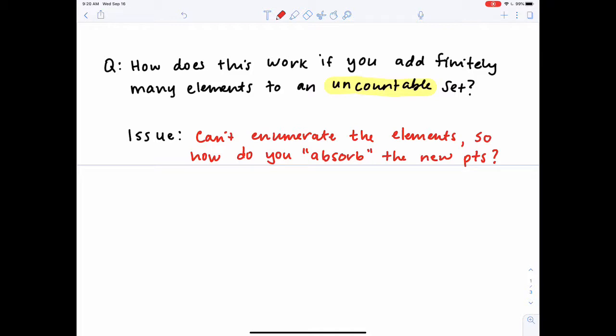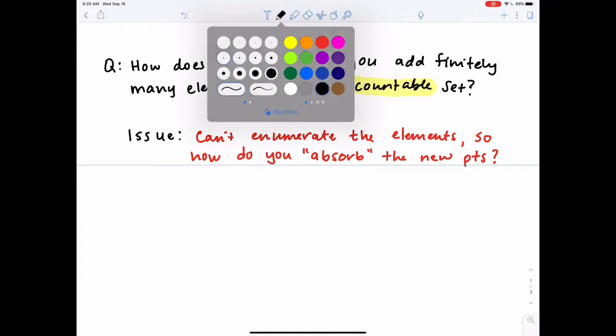Well, when you have an uncountable set, it is possible to look at a subset of it that is countable. Because remember, uncountable is just a step bigger than countable. So you could enumerate a countable subset of those elements and use that to absorb the new points. But then you have to worry about, what about the other values that I didn't list in my enumeration? What do I do with those? So to see how this works, we're going to do an example.